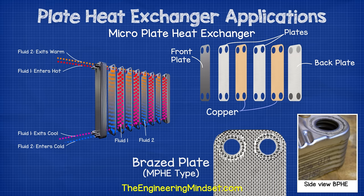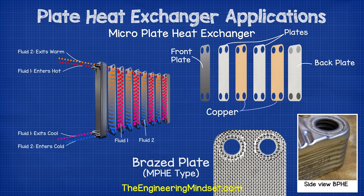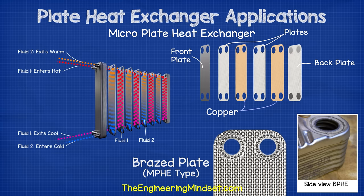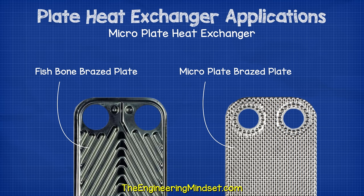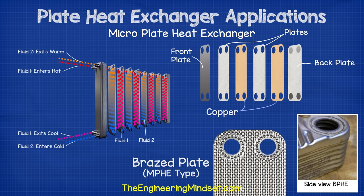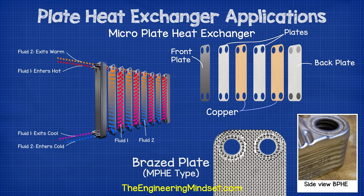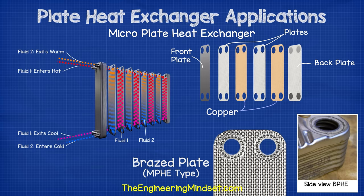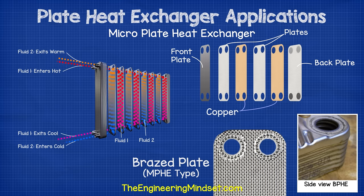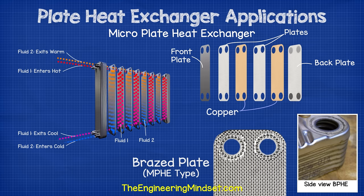Micro plate heat exchangers can be either gasket or brazed plate design and are the next evolution of plate heat exchangers, providing the greatest heat transfer efficiency to date. Standard heat exchangers use a chevron or fishbone pattern pressed into the plate, but micro plate heat exchangers instead use small dimples. This allows the fluids to spread across the plates much more evenly, maximizing heat transfer surface area. It also causes more turbulent fluid flow, which further increases heat transfer. The small dimples increase surface area, allowing more opportunities for heat transfer, and these design improvements allow lighter and smaller heat exchangers to be used.